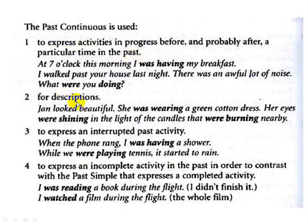Number two, for descriptions. For example, Jan looked beautiful. She was wearing a green cotton dress — 'was wearing' is describing Jan and what she was wearing. Her eyes were shining — 'were shining' is describing Jan's eyes.